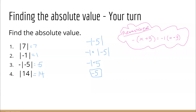Here are your answers. For number one, you should have gotten seven. Number two is one. Number four is 14. For number three, you might have been a little bit confused because we had that negative sign outside of our absolute value. The actual answer is negative five, and I'm going to tell you why.